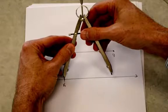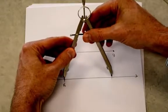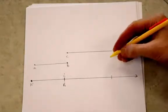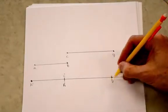I'm going to translate down here to point C prime. And I'm going to make my mark. And this point here is going to be D prime.